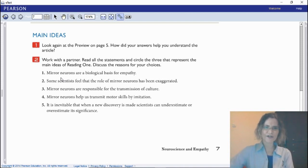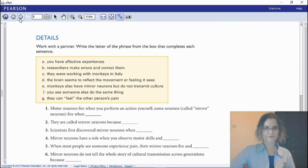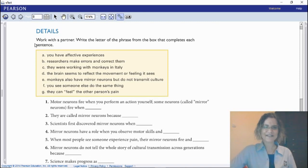Number two: Work by yourself. You read the statements and circle the three that represent the main ideas of Reading 1. So there are several statements, five statements, but I'd like you to find the three that represent the main ideas of the text.